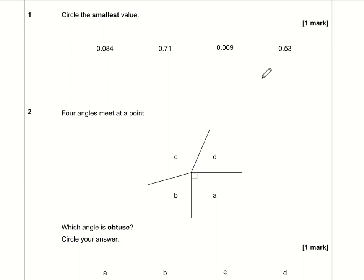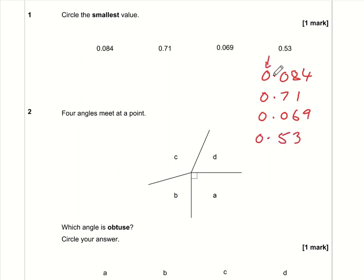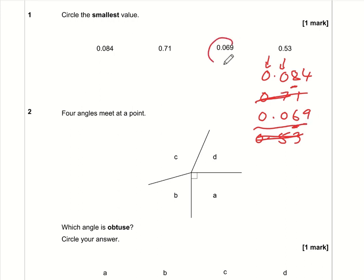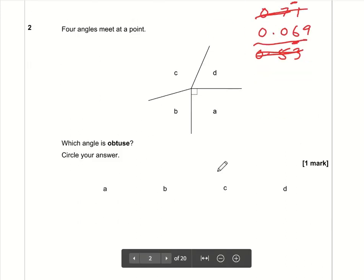Question 1: we need to circle the smallest value. I'd write them all out in a column — 0.084, 0.71, 0.069, and 0.53 — to make it easier to compare. In the units column everything is zero, so in the tenths we've got 0, 7, 0, and 5. The smallest tenths digit is 0, so we can eliminate 0.71 and 0.53. Comparing the remaining two in the hundredths: we've got 8 and 6, and 6 is less than 8, so 0.069 is the smallest value.